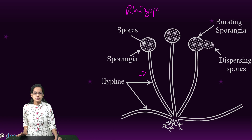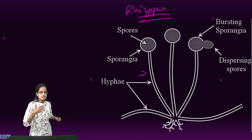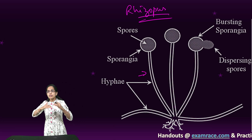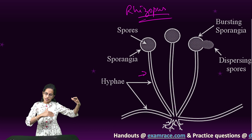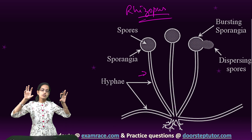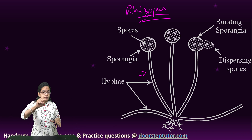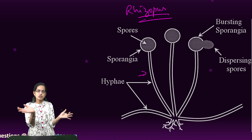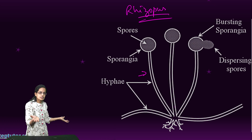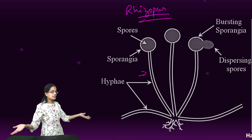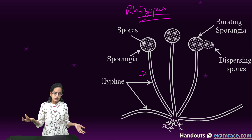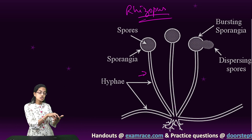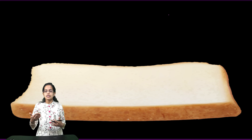The example of this is Rhizopus. What happens is Rhizopus develops on a moist bread surface. Firstly, the hyphae develop, and from the hyphae you have sporangia. Sporangia is an accumulation of numerous spores. As the bursting of sporangia takes place, all these spores are separated out, and each spore is capable of forming a new Rhizopus. This is what we understand as spore formation.